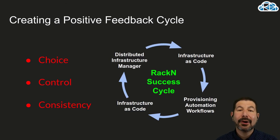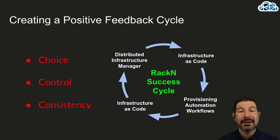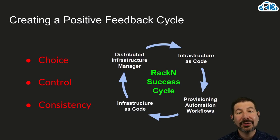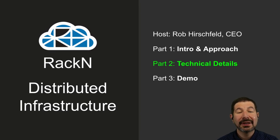These three things together are really the essence of what we've captured with the Racken success cycle, and that's a really important part of creating this positive feedback cycle. At the end of the day, it's about how we take the data center that you have and the choices you want to make, and allow you to improve your operations day after day. That means codifying best practices and lessons learned into infrastructure as code, feeding that into your test sites to validate everything works, and then having a consistent, clear way to replicate that success across all of your infrastructure. In our next section, we're going to discuss the technical details of how Racken has achieved this.